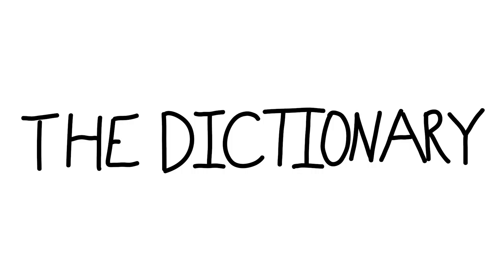Two: action or process, as in haulage, H-A-U-L-A-G-E. 2b: cumulative result of, as in breakage. 2c: rate of, as in dosage. Three: house or place of, as in orphanage. Four: state or rank, as in peonage, P-E-O-N-A-G-E. And lastly five has the definition charge, as in postage. That is a very weird suffix — when I see a word like haulage or dosage, I'm expecting the definition to be that word, but I know it's about what -age means in relation to it.